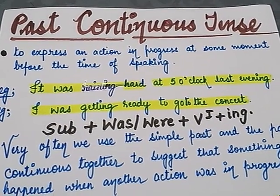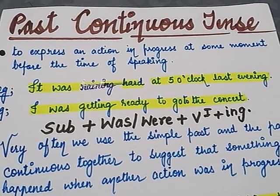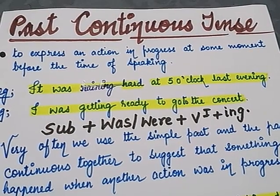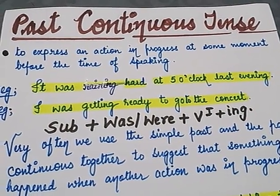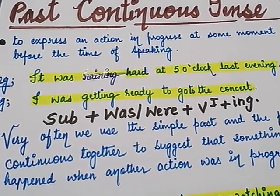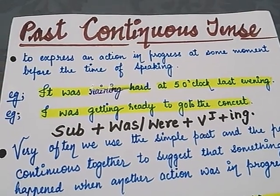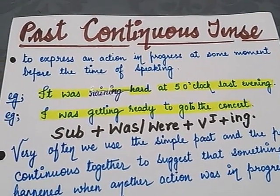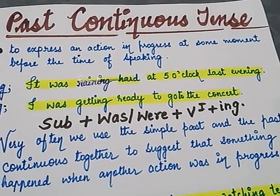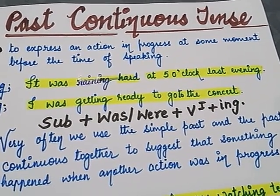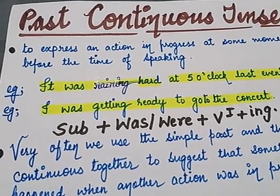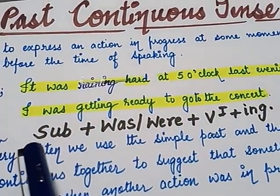We have discussed simple present, present continuous, present perfect, present perfect continuous, and in the past tenses we have discussed simple past. So you have to differentiate what is there in simple past and what is there in past continuous. Now let us start without wasting time.